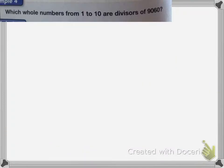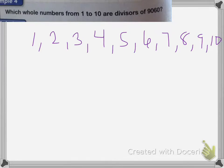So which whole numbers from 1 to 10 are divisors of 9060? So it's asking, which of these numbers can I divide that by? And so I'm going to look. So we already know that it can be divided by 1 because everything is. My number up here, it has a 0 at the end of it, so I know it can be divided by 10 and 5. It's also an even number, so it can be divided by 2.